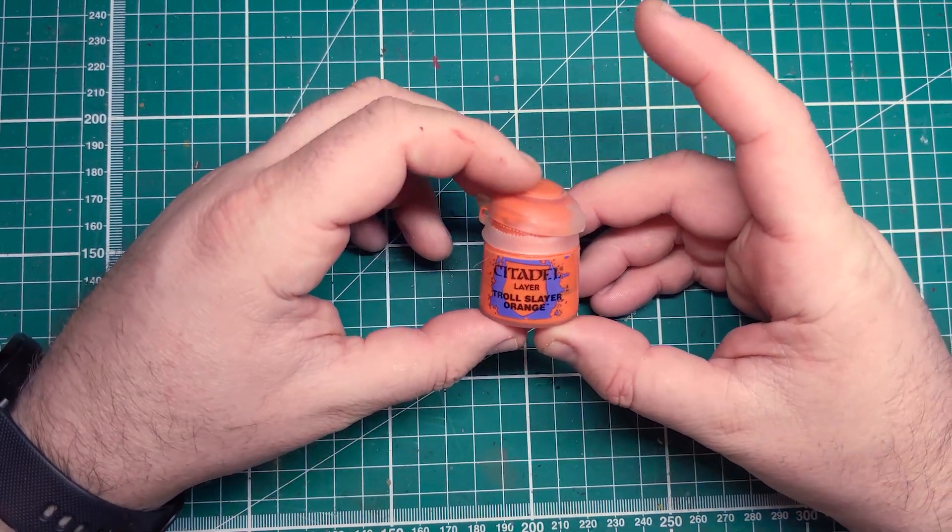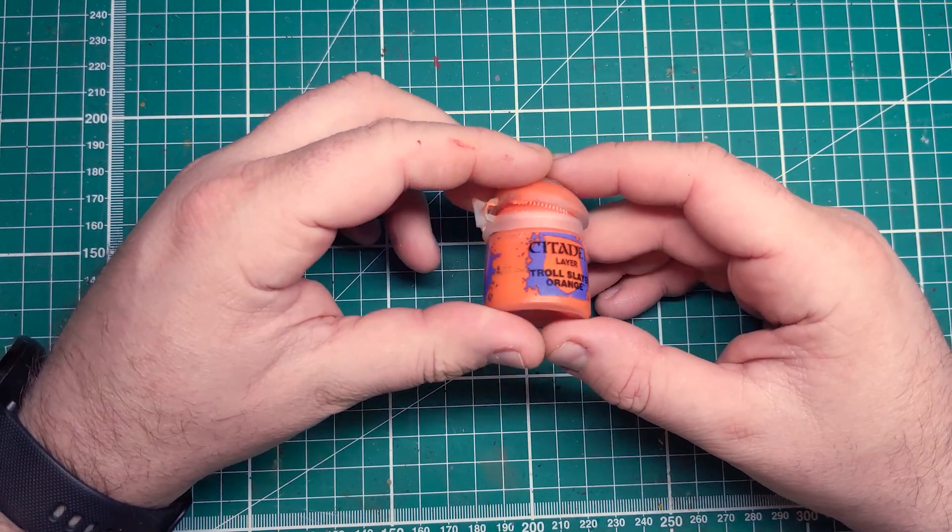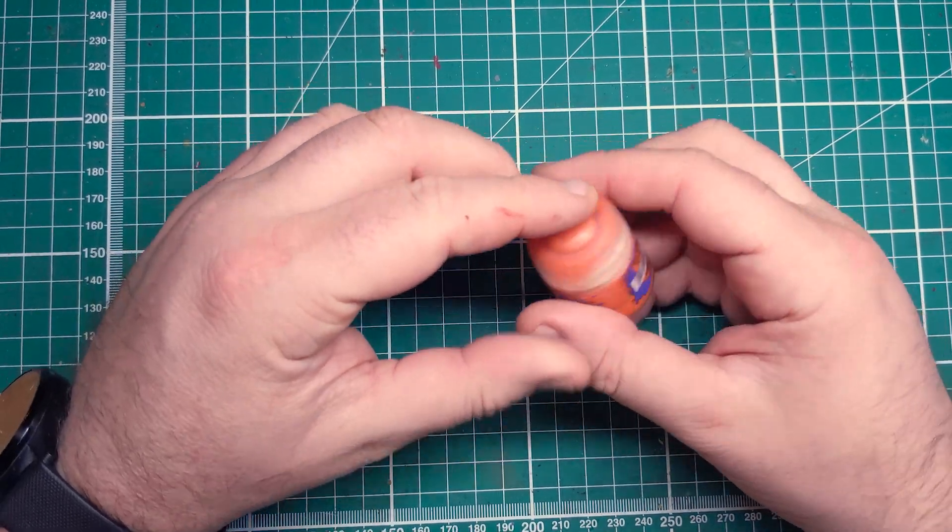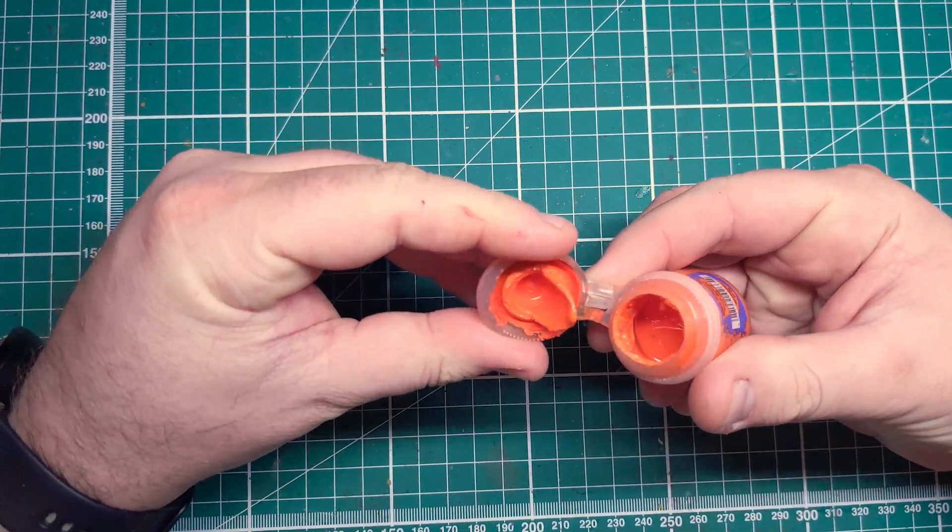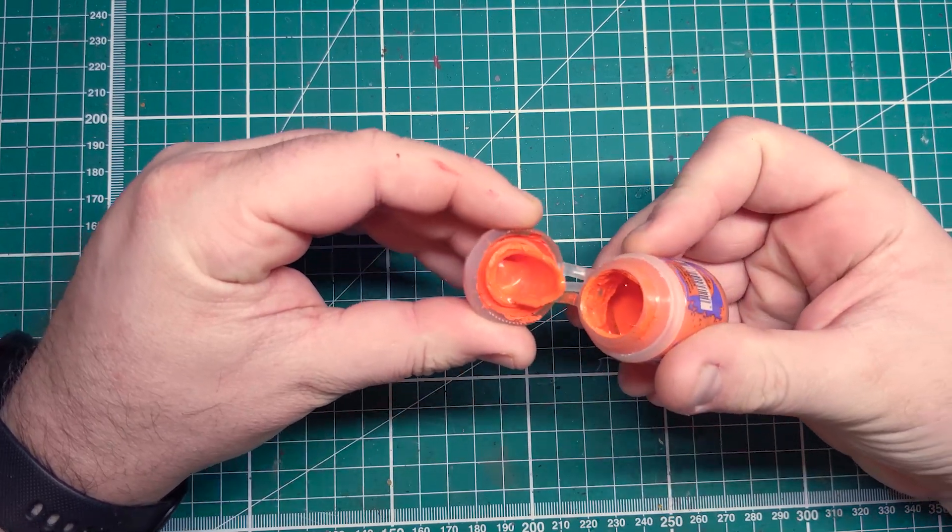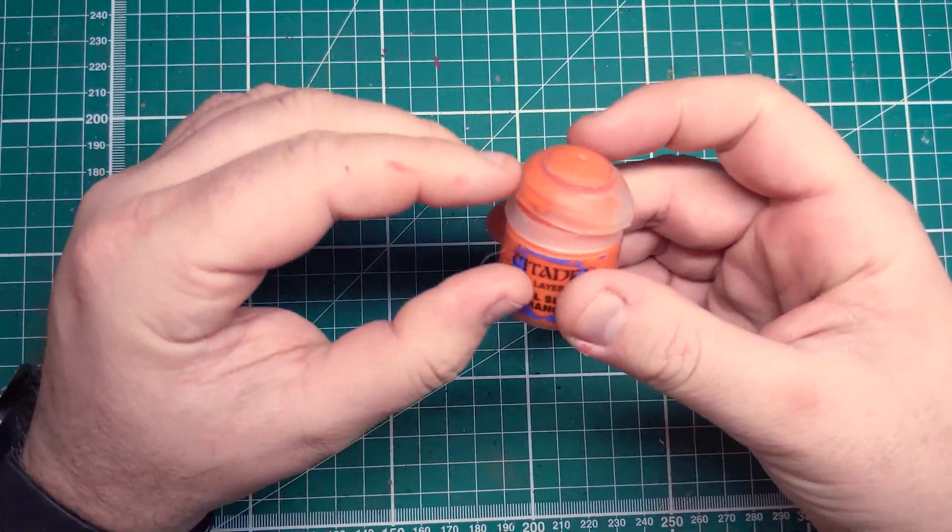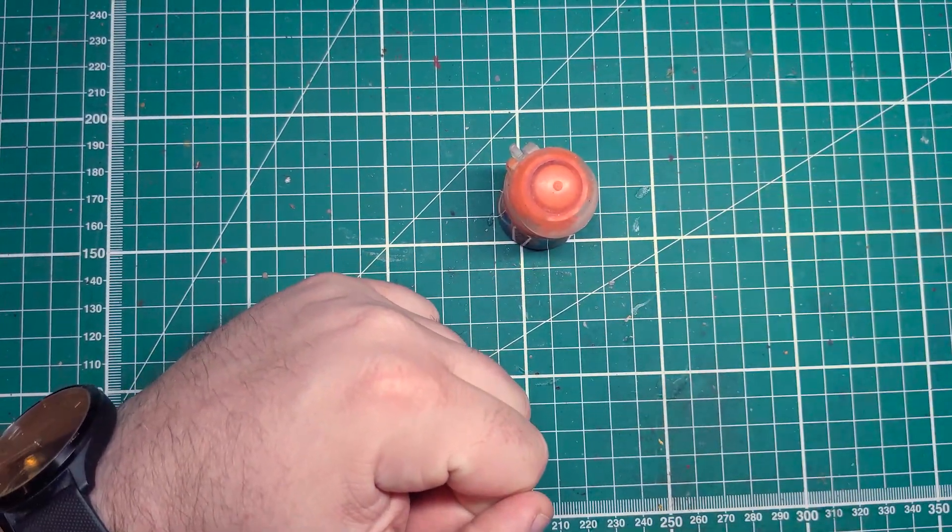Hi folks, in this video we're going to be looking at how to clean out dried paint gunk from within the lids of Games Workshop paint pots, which often lead to the lids not sealing properly, leading to your paints drying out. So without any further ado, let's cue the music.